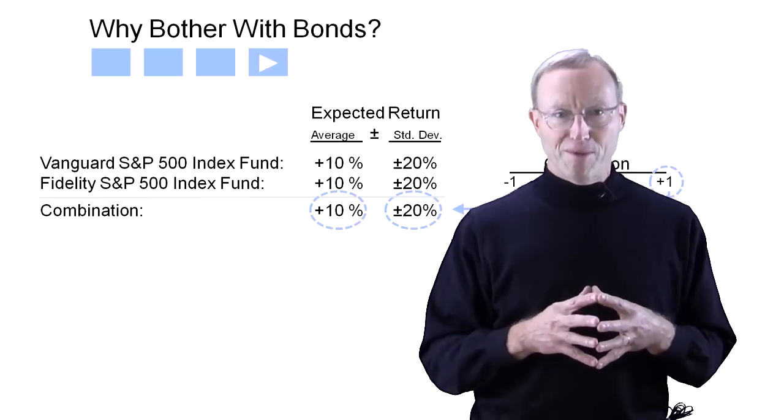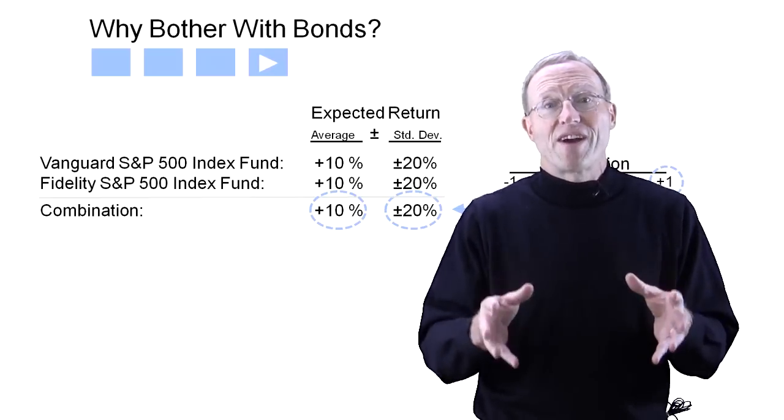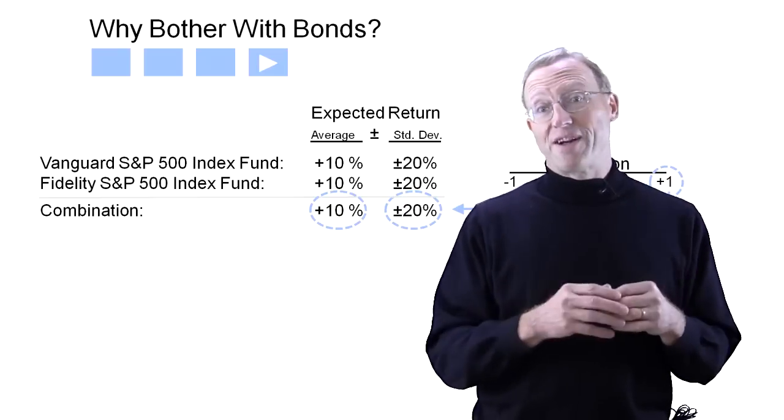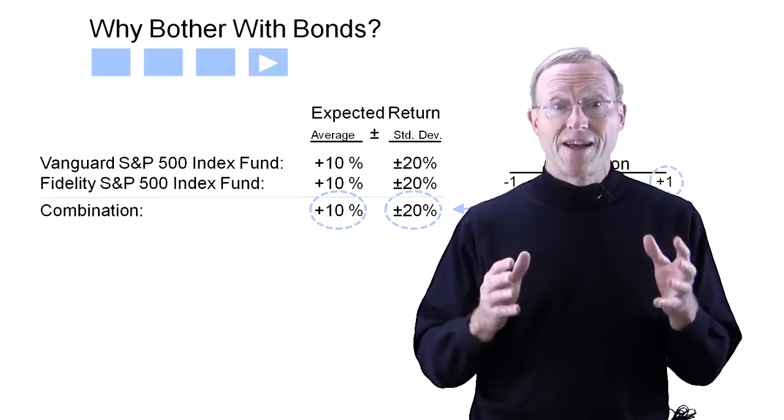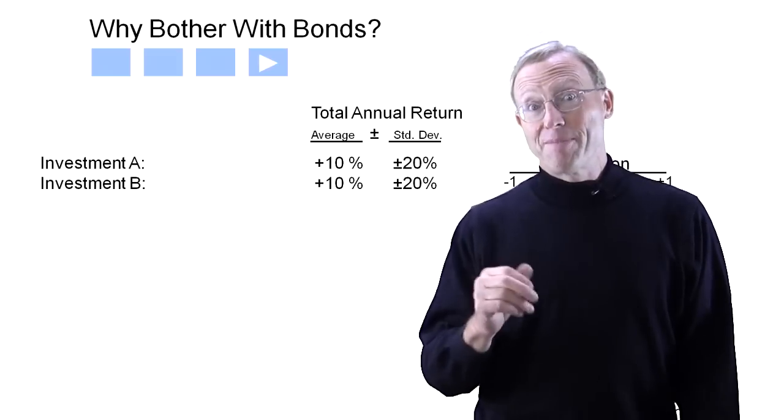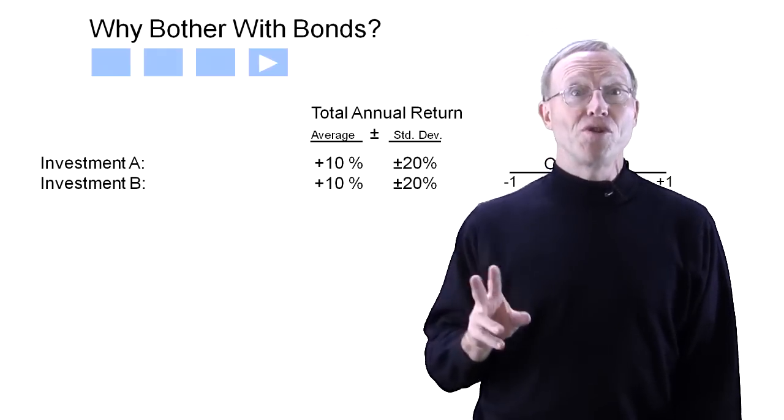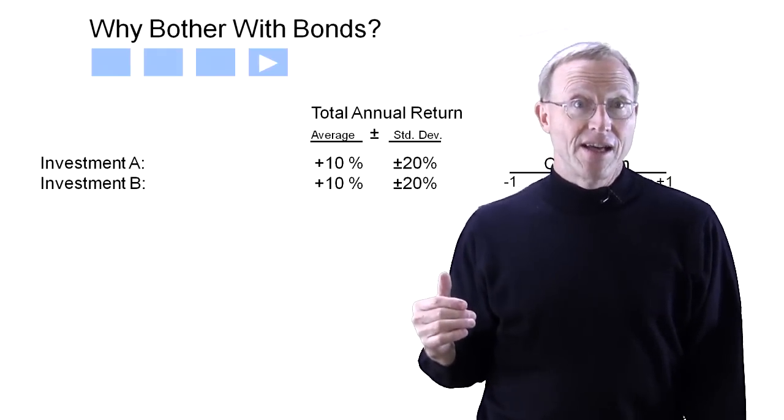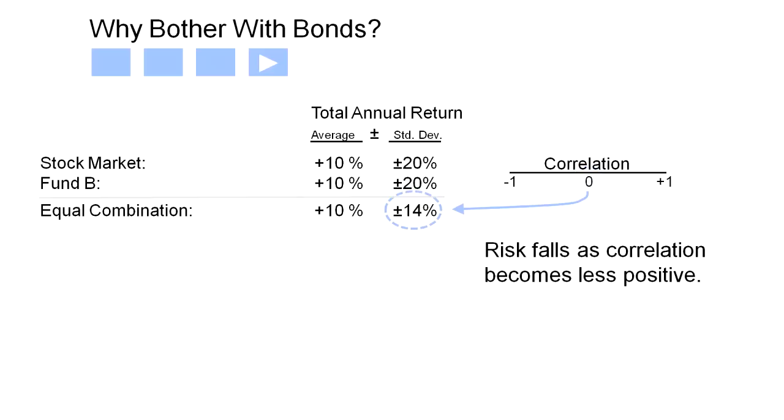Here's the part that may blow your mind. A portfolio of assets that are not perfectly correlated always provides a better risk-return opportunity than the individual assets on their own. For example, here we combine an equal amount of two funds with the same expected return and the same volatility that are completely uncorrelated with each other, meaning the movements are completely independent and unaffected by each other.